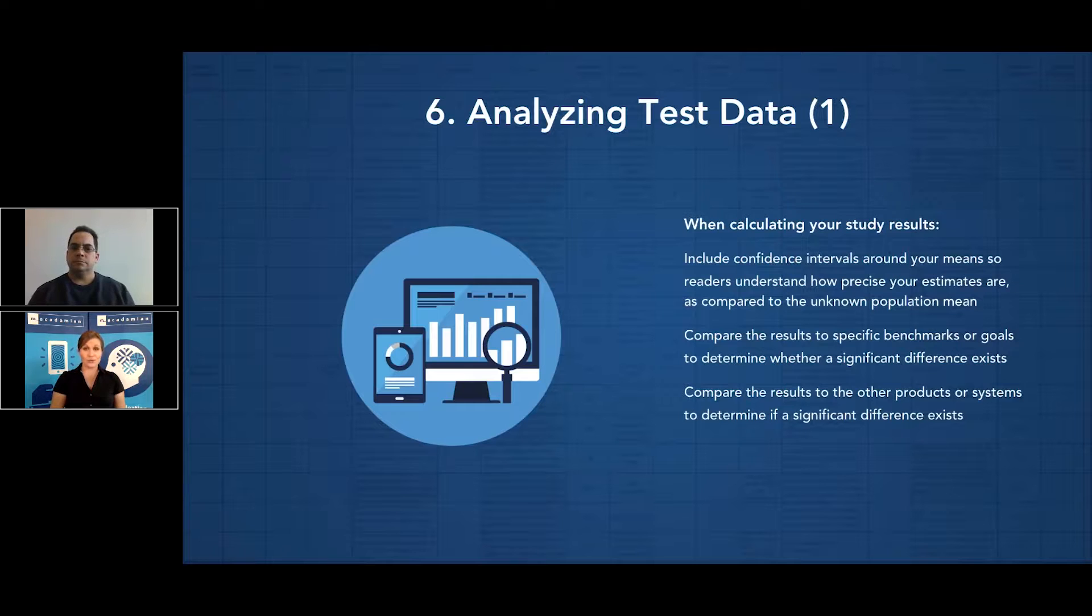For most usability tests, quantitative data that is collected is some combination of completion rates, errors that you observe during the test sessions, deviations like Tony explained earlier today, task times if you are timing participants on completing each test task, task level satisfaction ratings, and perhaps lists of usability problems that you've captured and maybe rated on frequency and severity.